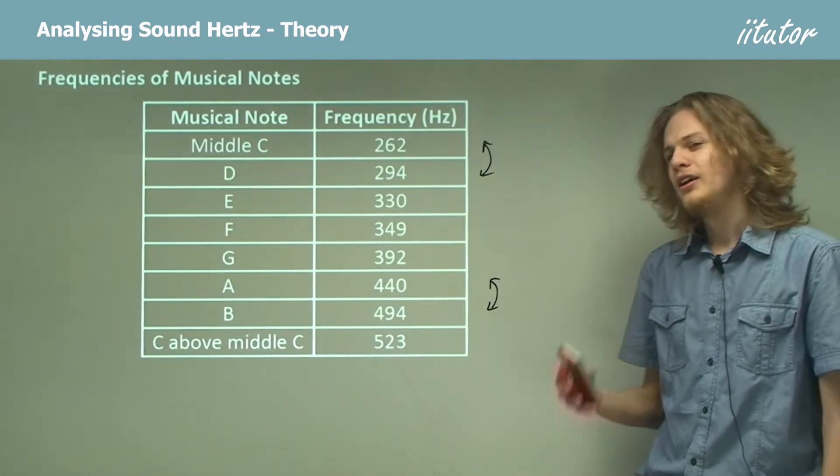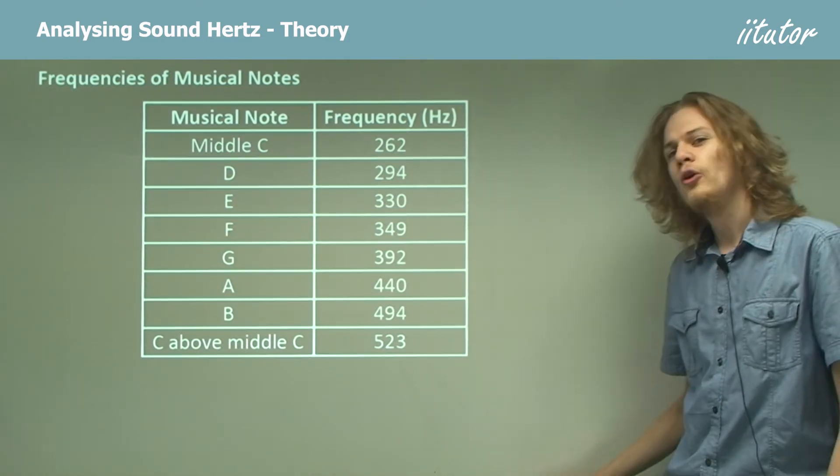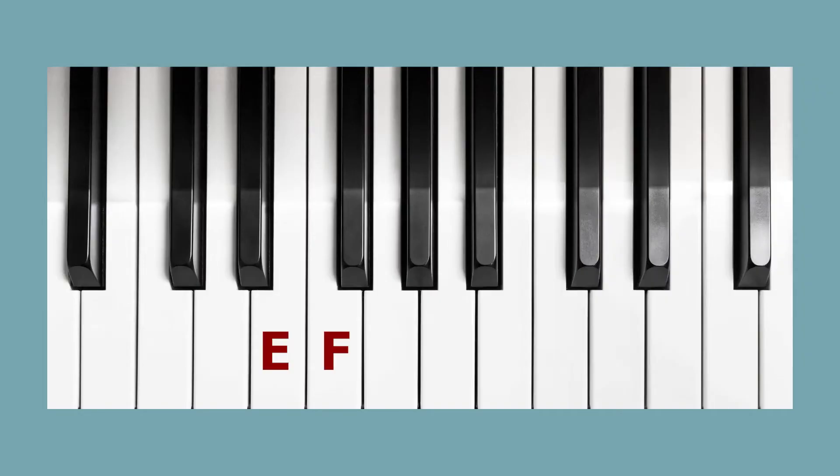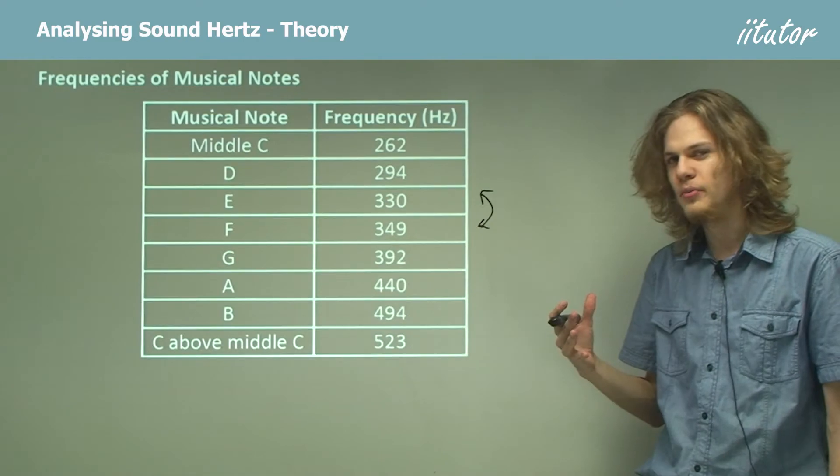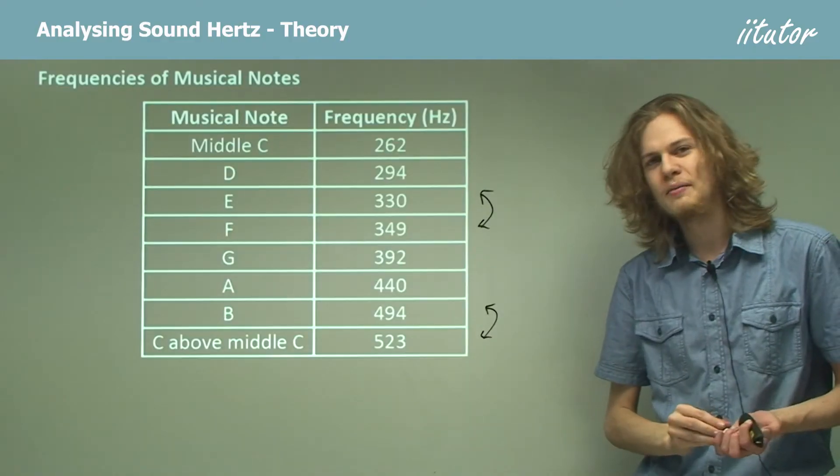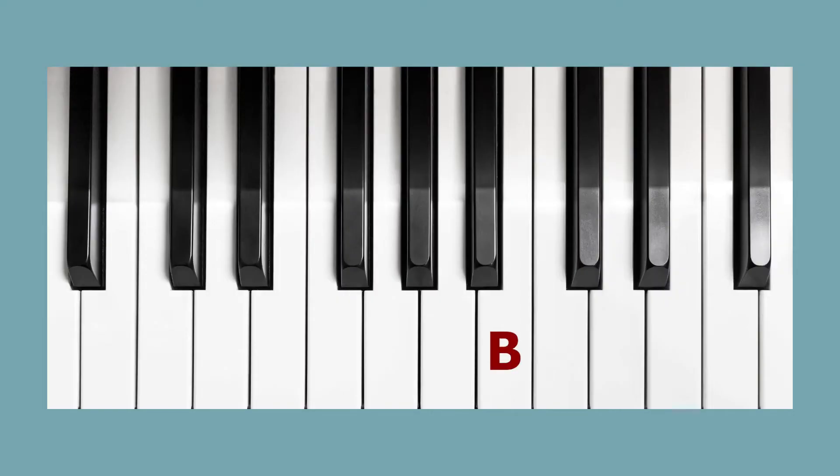It's also interesting to notice that not all of these notes on the scale are the same distance apart. In particular, E and F are closer together than you'd expect them to be, and B and C are closer together. If you look at these notes on a piano keyboard, you'll notice that B and C and E and F don't have any black notes in between them. This means that rather than being a whole tone apart, they're only half a tone apart, or a semitone.